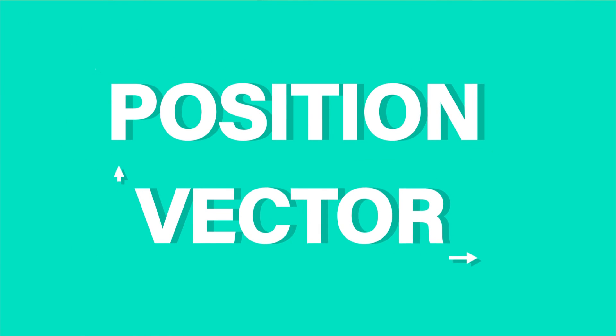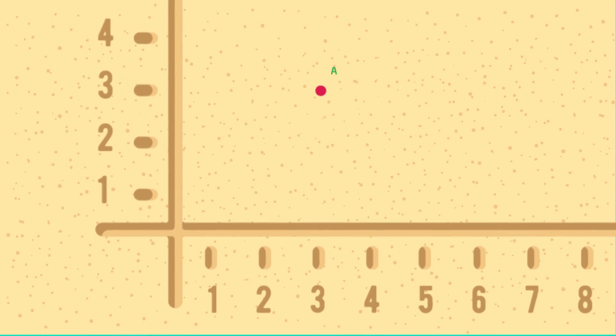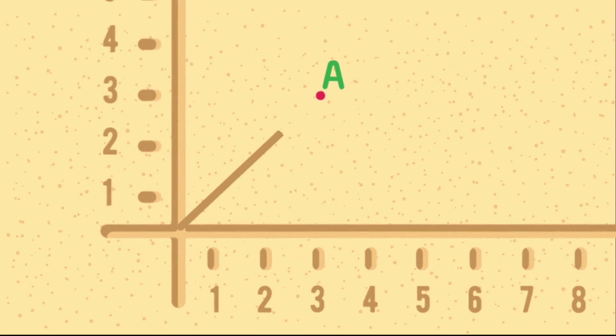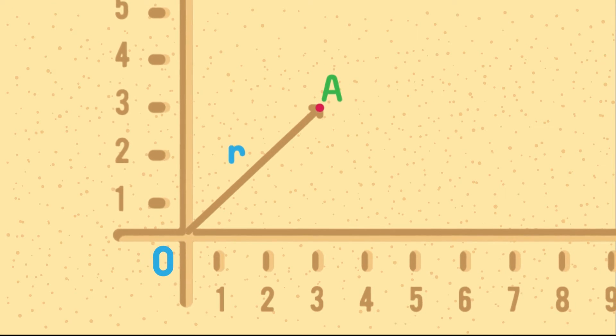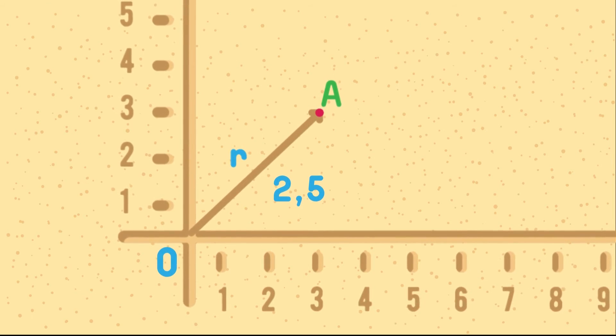Position vector. Position vector is the vector which represents the position of a point in a space, with respect to the origin, O. It also represents the distance and direction of the points from the origin.